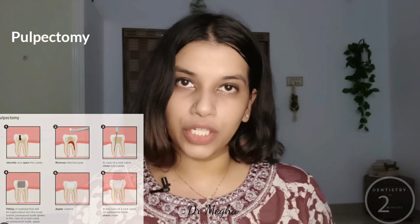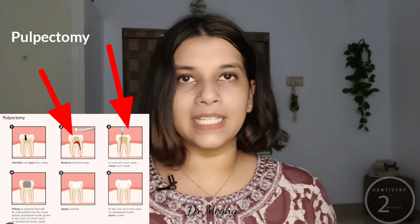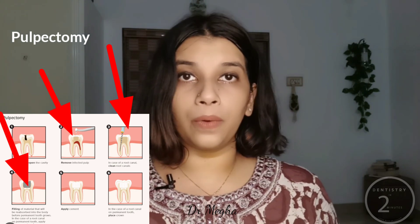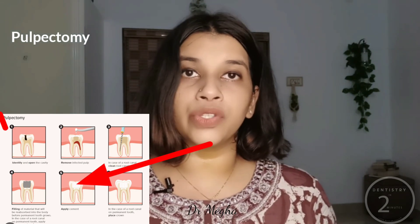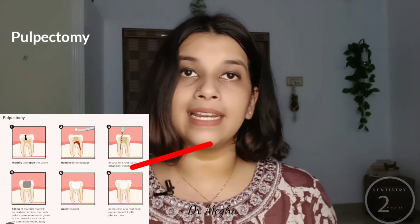Pulpectomy is a non-vital pulp therapy procedure which is usually performed in a primary tooth. It involves the removal of the coronal and the radicular portion of the pulp, followed by the placement of a suitable material within the radicular space and sealing the coronal portion of the tooth by using a restorative material and finally a stainless steel crown.